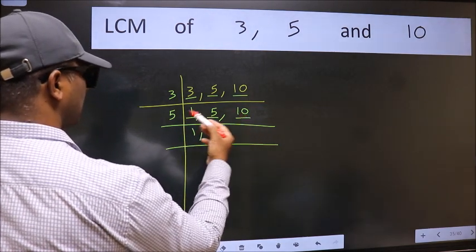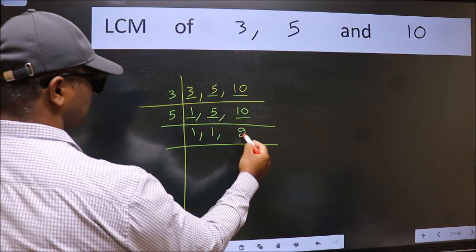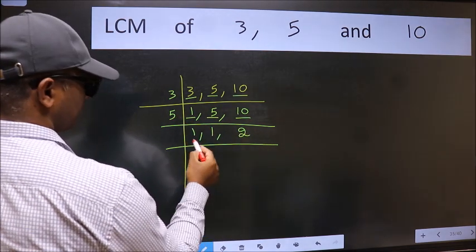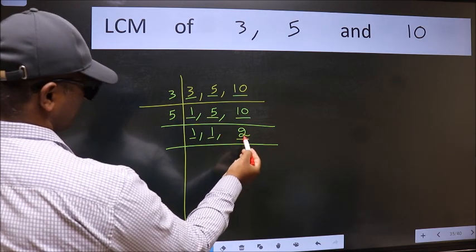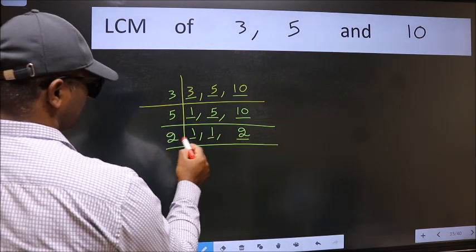The other number 10, when do we get 10 in the 5 table? 5 times 2 is 10. Now we got 1 here and here so focus on the next number 2. 2 is a prime number so 2 goes into 2 once.